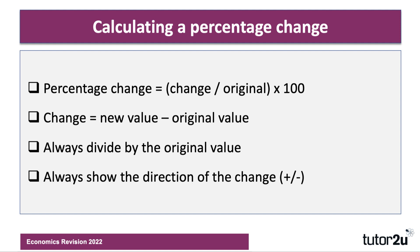A quick reminder that a percentage change is the change in a variable divided by the original, and then multiplied by 100 to give you the percentage change. The change, of course, is the new value minus the original value, and always divide by the original value. Remember to always show the direction of the change — if it's a minus, for example a fall in something, remember to put the minus in the percentage calculation.